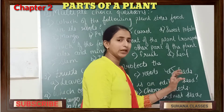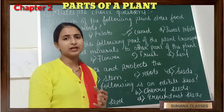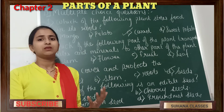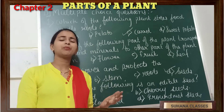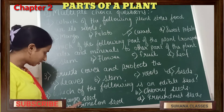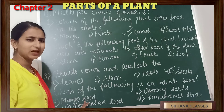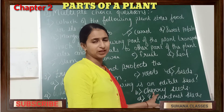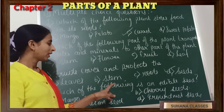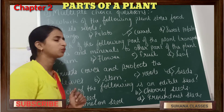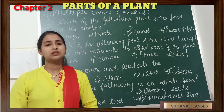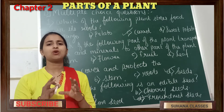Next question: which of the following is an edible seed? When studying seeds in detail, we learned there are two types: edible seeds, which we can eat, and inedible seeds, which we cannot eat. Mango seeds — we do not eat them. Cherry seeds — no. Watermelon seeds — no. Groundnut seeds — yes, we eat groundnuts. So groundnut seeds is the correct answer.